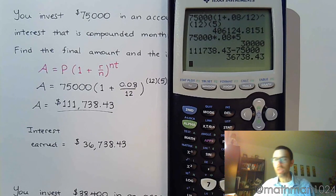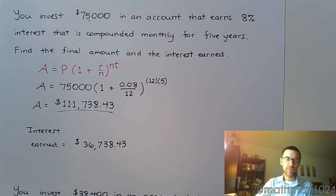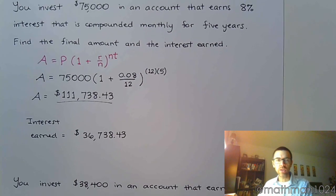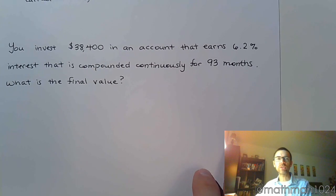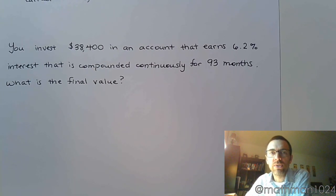All right. Let's look at our next question that we have. The next question is, investing $38,400 in an account that earned 6.2% interest that is compounded continuously for 93 months.